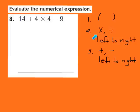Step 1 says to perform anything in parentheses first. Step 2 says multiply or divide from left to right. Step 3 says add or subtract from left to right. When I go back to step 1, parentheses, and look at my expression, I notice that I don't have any parentheses in that expression.